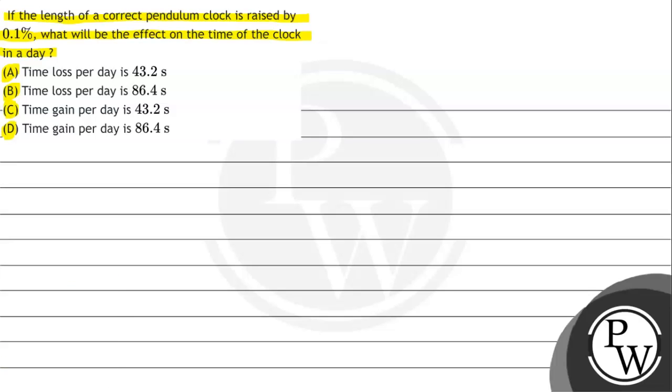To understand the given question, we need to understand the simple pendulum concept. The simple pendulum time period is given by the expression T = 2π√(l/g), where l is the length of pendulum and g is acceleration due to gravity.